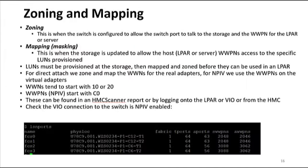There's a lot of confusion about the difference between zoning and mapping. Zoning is when the switch is configured to allow the switch port to talk to the storage and the WWPN for the LPAR or server. Basically, if we're zoning at the switch, we tell the switch what the worldwide port numbers are for the storage and for the LPAR or server it's going to talk to, and that's the only conversations it allows through that switch port. Mapping and masking is when I go to my storage subsystem, create my LUNs, and for each of those LUNs tell the storage subsystem which worldwide port numbers can have access to them. You need to do both in order to have end-to-end connectivity.